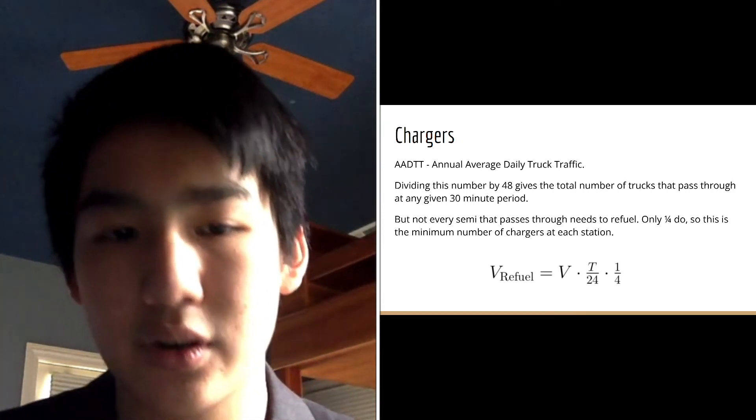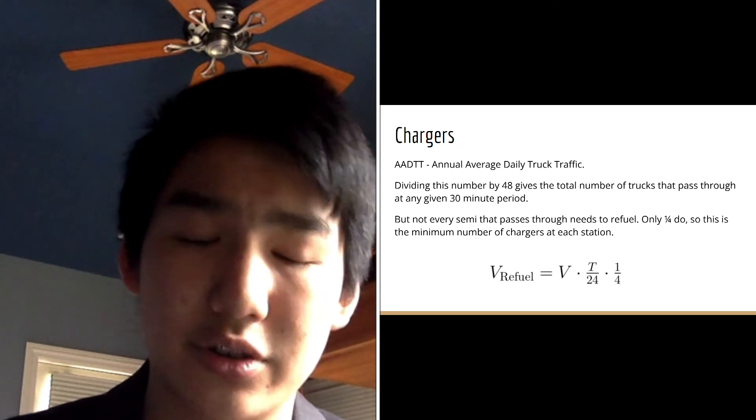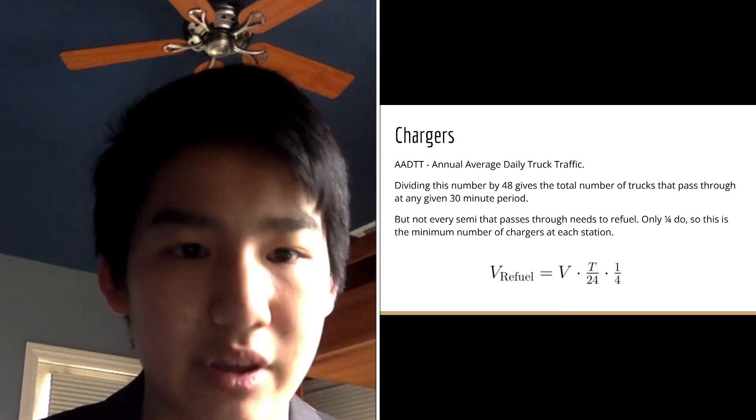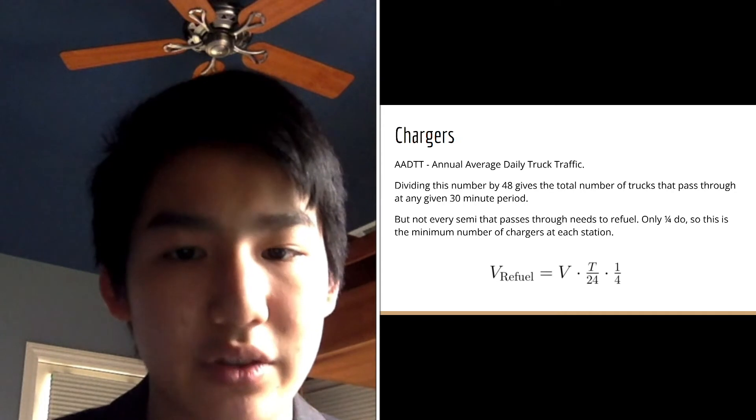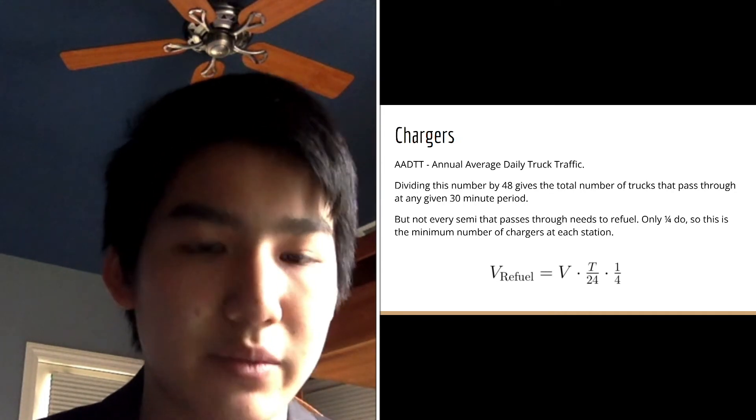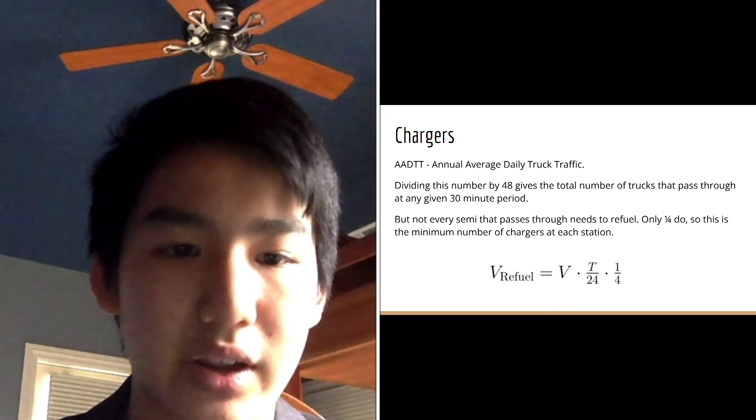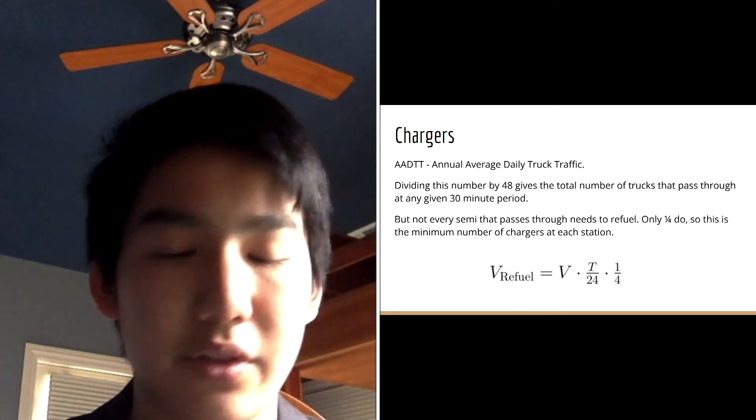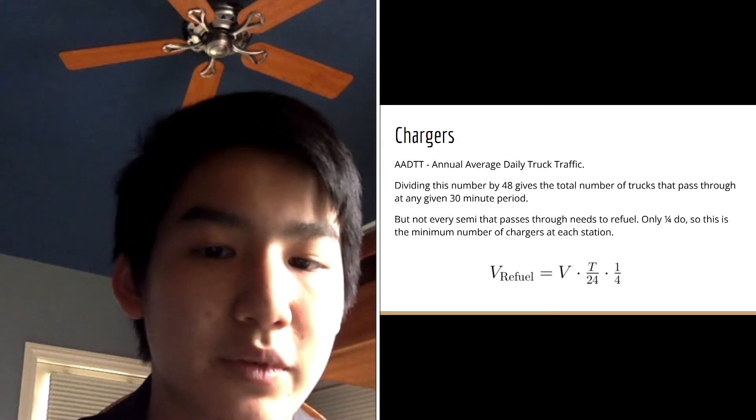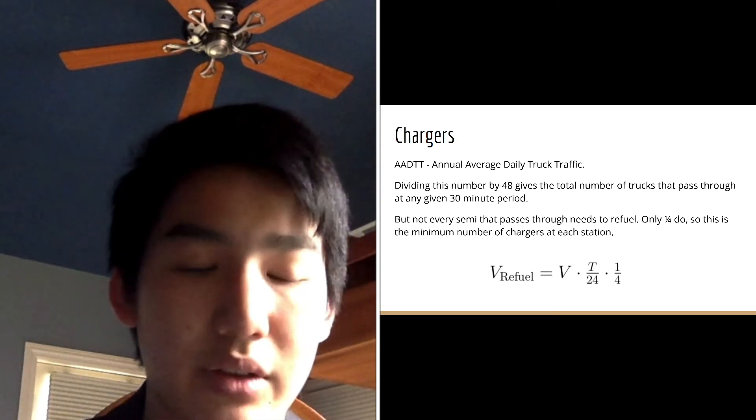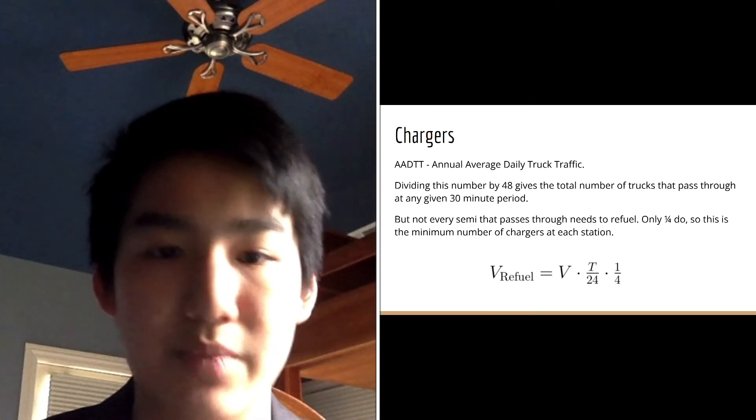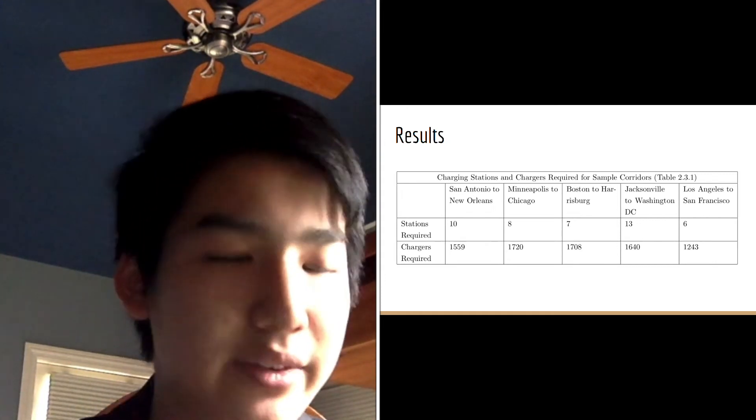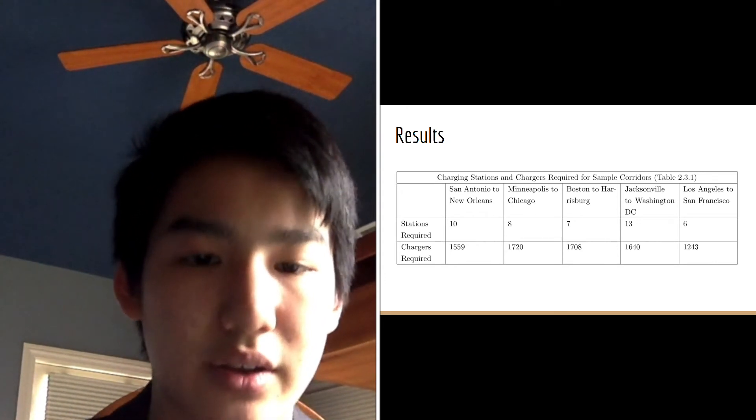So to determine how many trucks will actually need to be refueling, we observe that on average, each truck is first able to travel 200 miles before refueling. Assuming that all these trucks have a random amount of charge at any given point, such that they aren't all moving synchronously and all have the exact same charge at every point, that would mean roughly a quarter of all trucks need refueling at any given time. This ultimately gives us that the number of trucks that we will need refueling is effectively just one quarter of the total number of trucks that pass through a specific exit ramp. This ultimately gives us the number of charges required, as any less than that will mean you will have backlog of traffic.